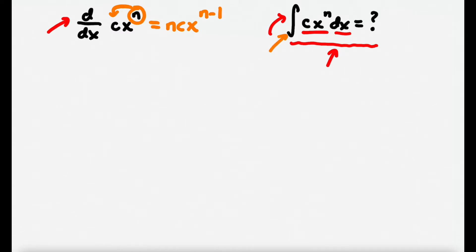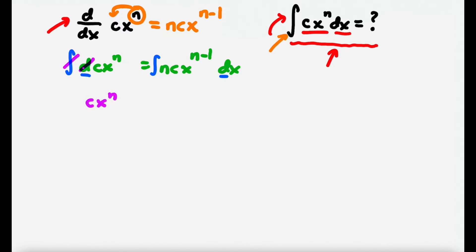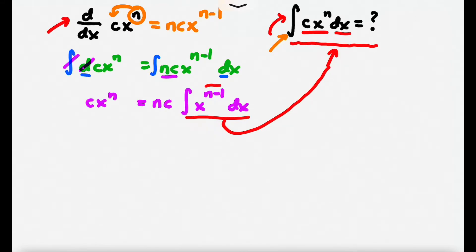Next, I'm going to multiply both sides by dx, so you end up with d(cx^n) = n·c·x^(n-1) dx. From here, I can eliminate the d and the dx by taking the antiderivative of both sides. When you do that, the antiderivative symbol and the d cancel, leaving cx^n on the left. On the right, since n and c are constants, they can be pulled out in front of the integral, giving n·c times the integral of x^(n-1) dx. This looks similar to what we want, except we have x^(n-1) instead of x^n.